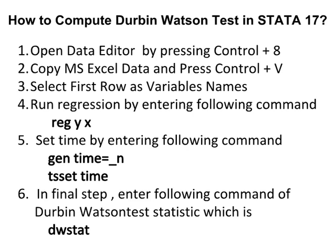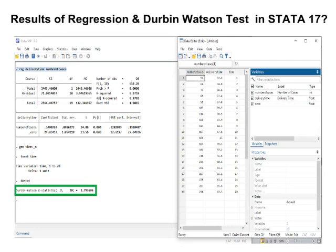In step 5, set the time by entering the command: gen time = _n, then tsset time. When you enter this command, delta is automatically set to 1 unit. In step 6, enter the Durban-Watson test statistic command: dwstat. The Durban-Watson test statistic result is 1.7936, bordered with green color, which is the same as the MS Excel results.